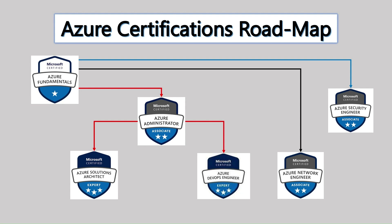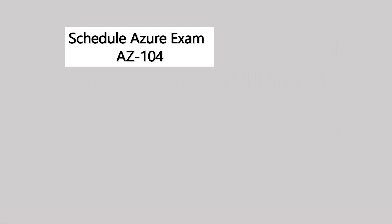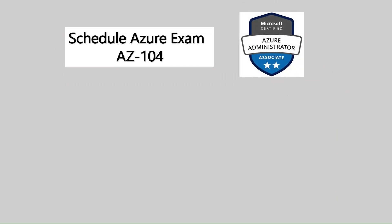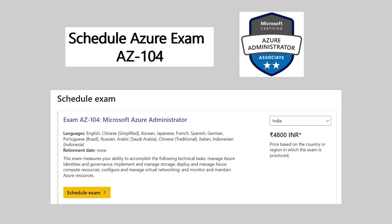I've picked only certain certification details to keep it simple. I'll take the example of AZ-104, the Microsoft Azure Administrator certification, and try to enroll for this exam to explain what the process involves. If you want to apply for any Microsoft Azure or Microsoft 365 certification, you can follow the same process I'm going to explain. So let's go to the Azure certification page and schedule for AZ-104.